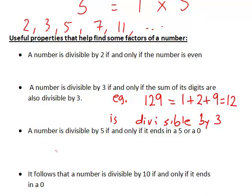Any number divisible by 5 will end in a 5 or a 0, and any number divisible by 10 will end in a 0.